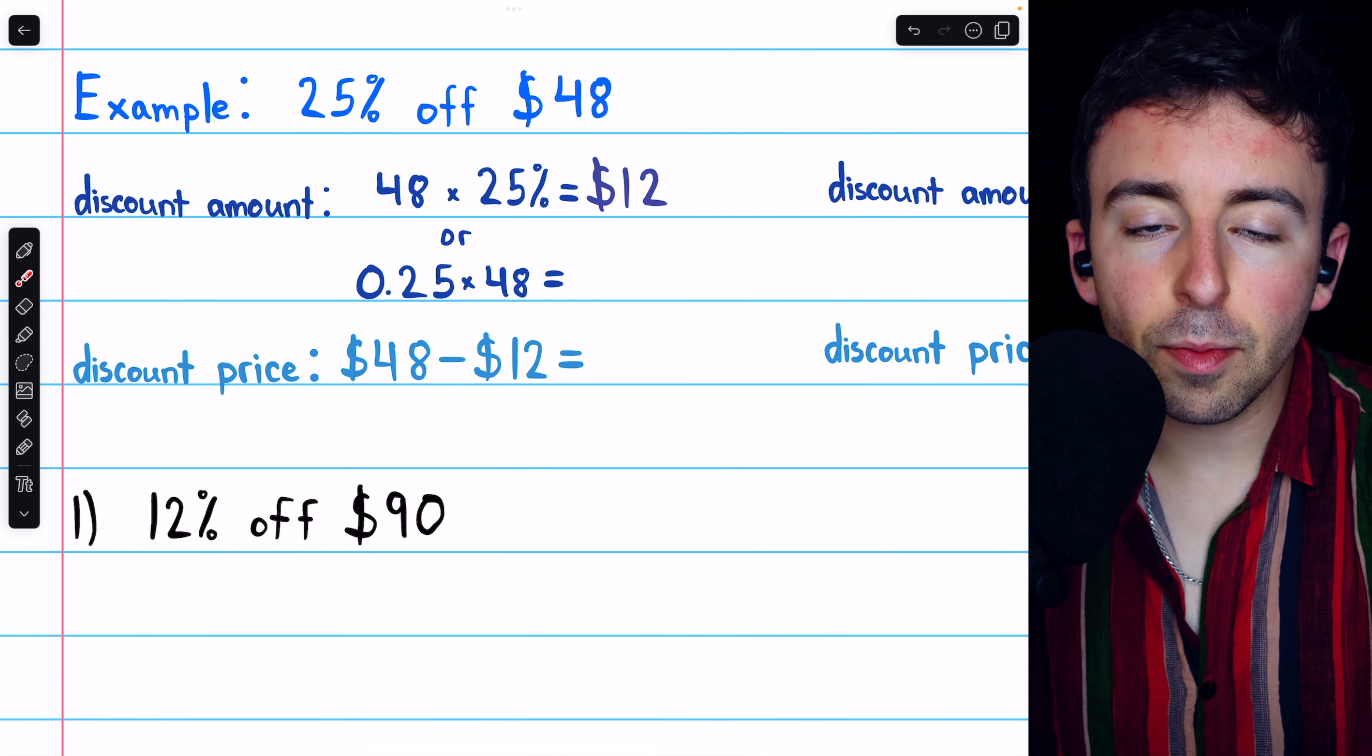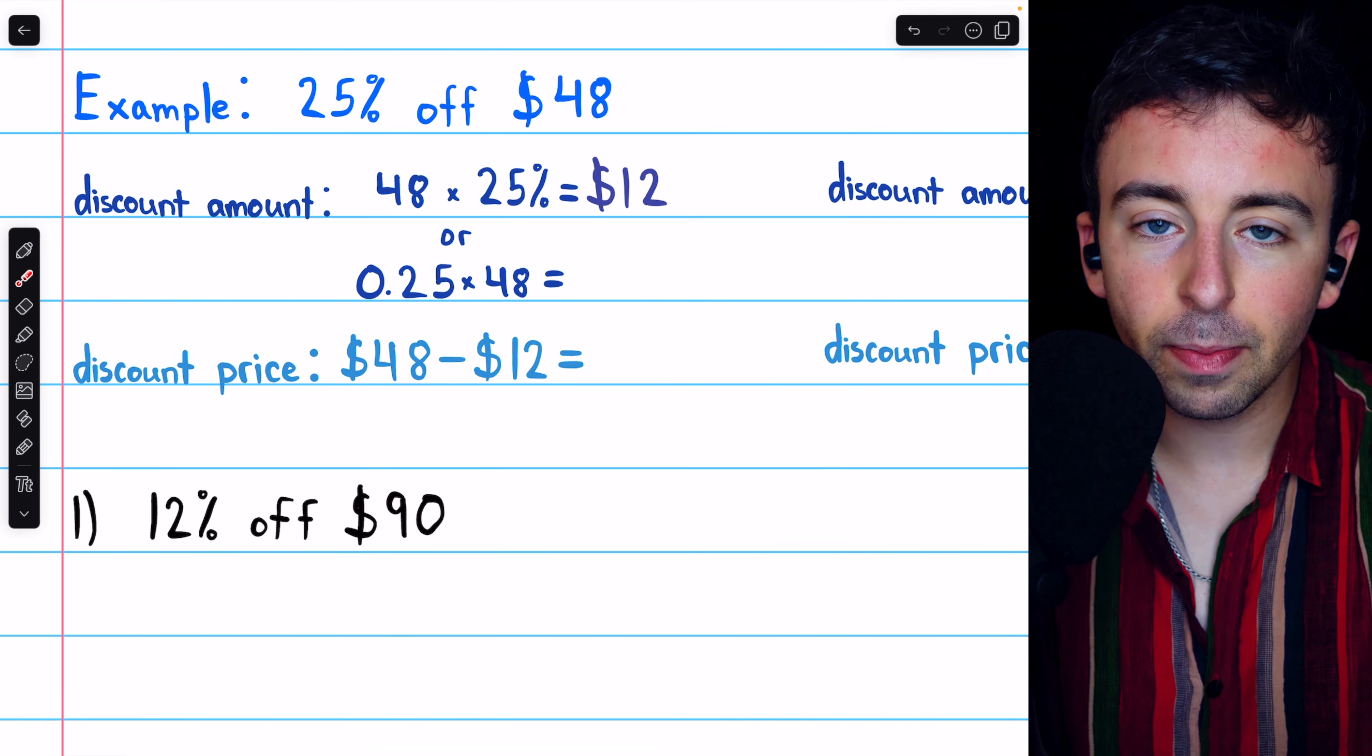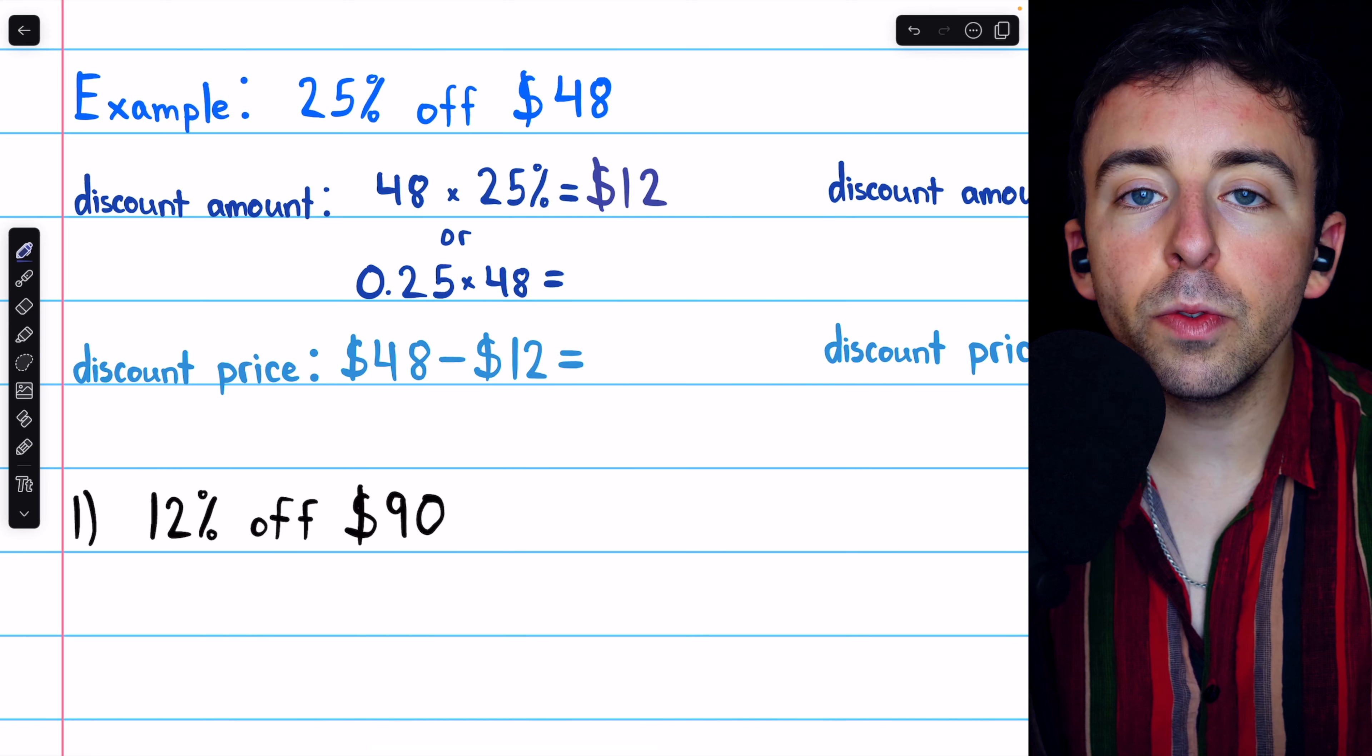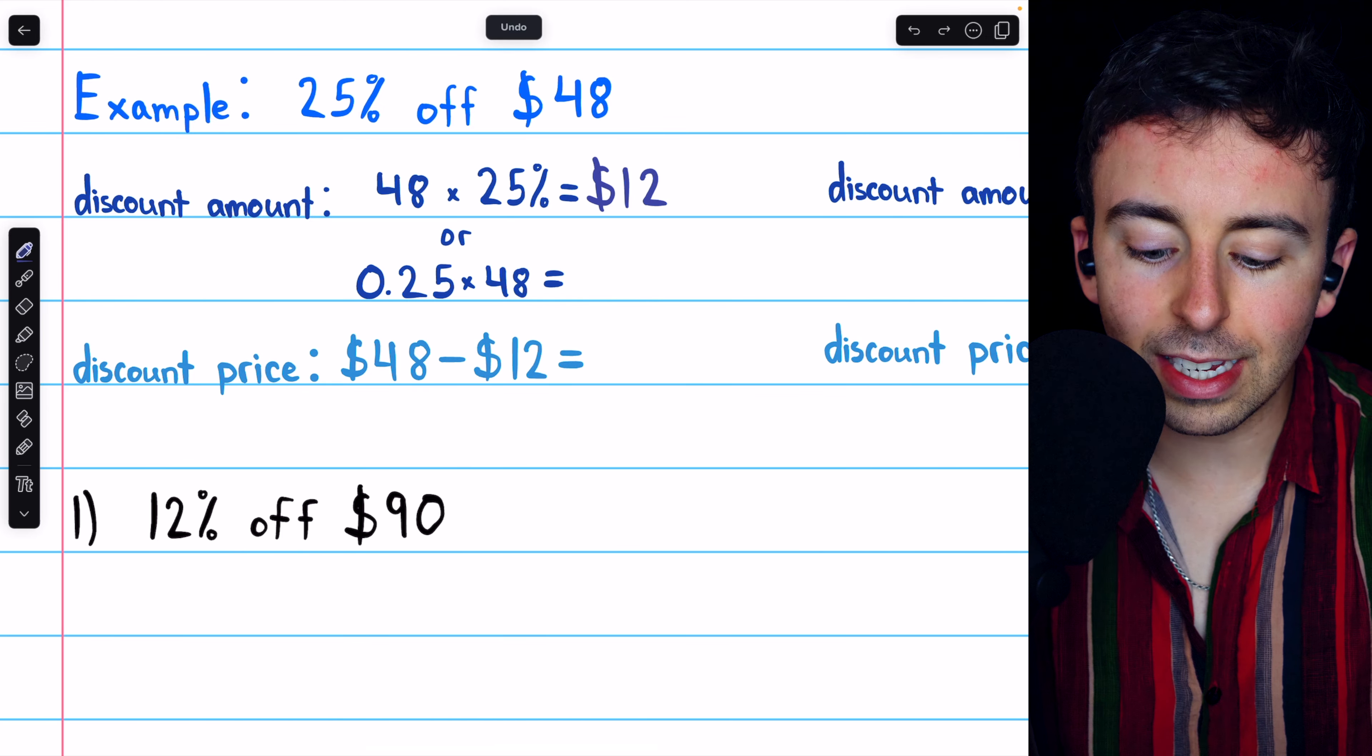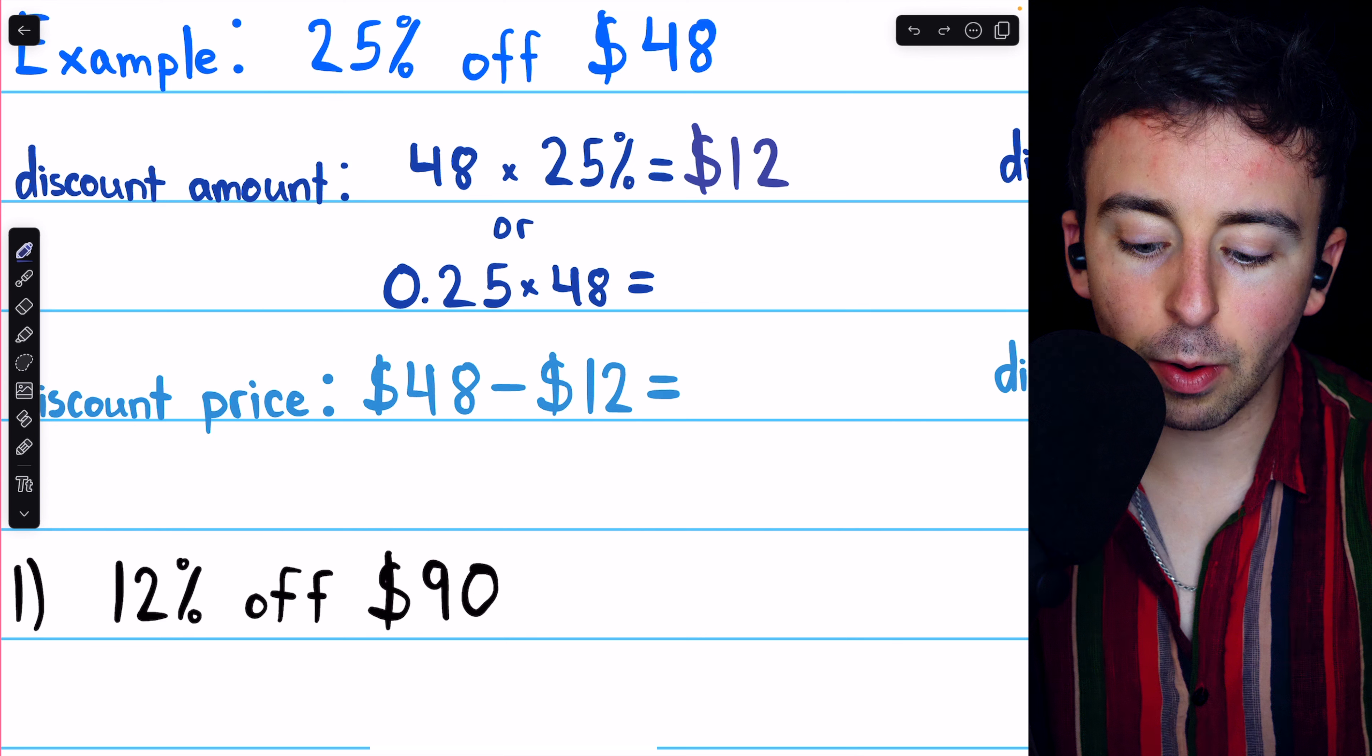If your calculator doesn't have a percent key, no big deal. Just rewrite the percent as a decimal and do the multiplication. To write a percent as a decimal, just move the decimal point to the left two places.